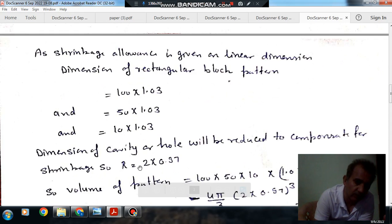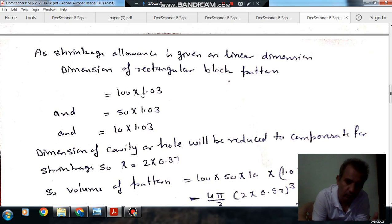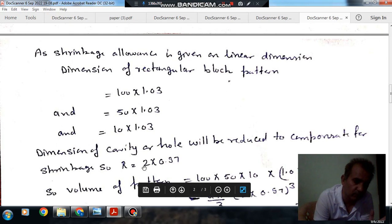For cavity will reduce the diameter of the hole or radius of hole by 3%. Other dimensions will increase because pattern has to be larger size for compensating for shrinkage. Cavity will reduce the diameter of the cavity in the pattern.